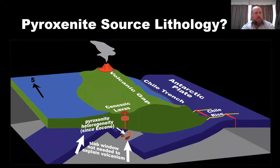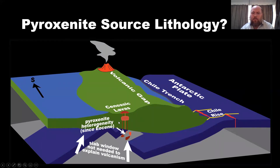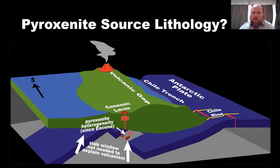Going back to the timeline, our hypothesis is that pyroxenite heterogeneity has existed since the Eocene. We're going to be testing olivine in the Eocene and Oligocene magmas to see if that is correct. If it is, a slab window is not needed to explain the volcanism there — only the destabilization and melting of these pyroxenite lithologies is necessary, which can occur without a slab window.